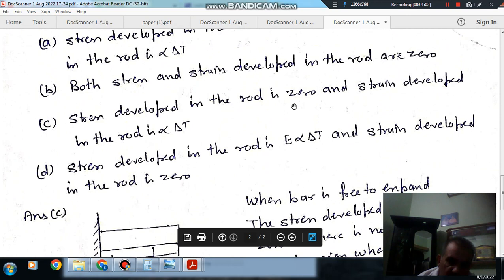So the answer is: stress developed in the rod is zero and strain is α×ΔT. The answer is option C.